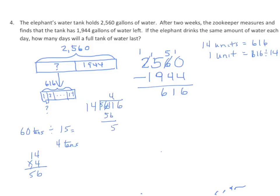I subtract and get 5. I need to decompose my 5 tens to 1s — 5 tens is 50 ones, plus 6 is 56 ones. That's handy, because I had 56 when I used 4 times 14, so we know that's a 4 again. We subtract and get 0. So we have 1 unit equals 44.